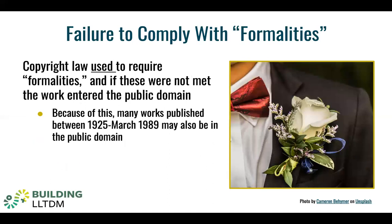Another way a work may enter the public domain is through a failure to comply with formalities. Copyright law used to require copyright owners to comply with certain requirements, called formalities, in order to secure copyright protection. These formalities included things like requiring the copyright owner to register works with the copyright office or to mark the work with a copyright notice. These requirements existed in some form through March 1989. Because many authors failed to comply, many works from between 1925 and March 1989 may be in the public domain. But this analysis needs to be done on a case-by-case basis, based on the facts surrounding a particular work. In some cases, a fair use analysis may be easier than making a conclusion about the copyright status of the work.